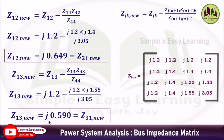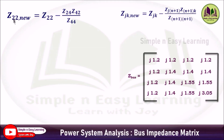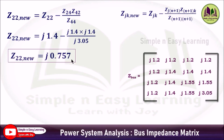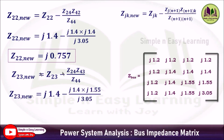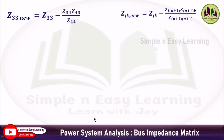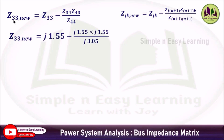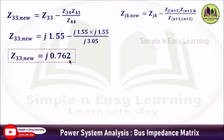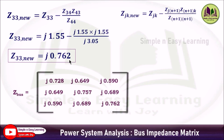Substituting the values from the matrix: Z13 = j0.590, and that equals Z31. Similarly, Z22 (j=2, k=2) equals j0.757. Z23 (j=2, k=3) gives j0.689, which equals Z32. Finally, Z33 (j=3, k=3) gives j0.762. So all nine parameters are calculated.